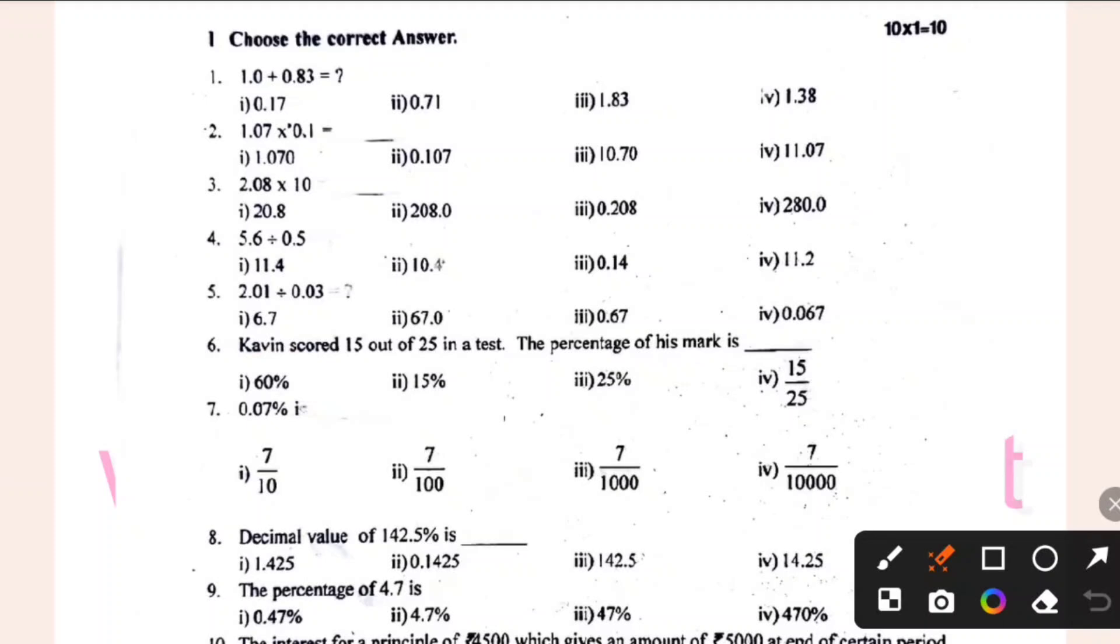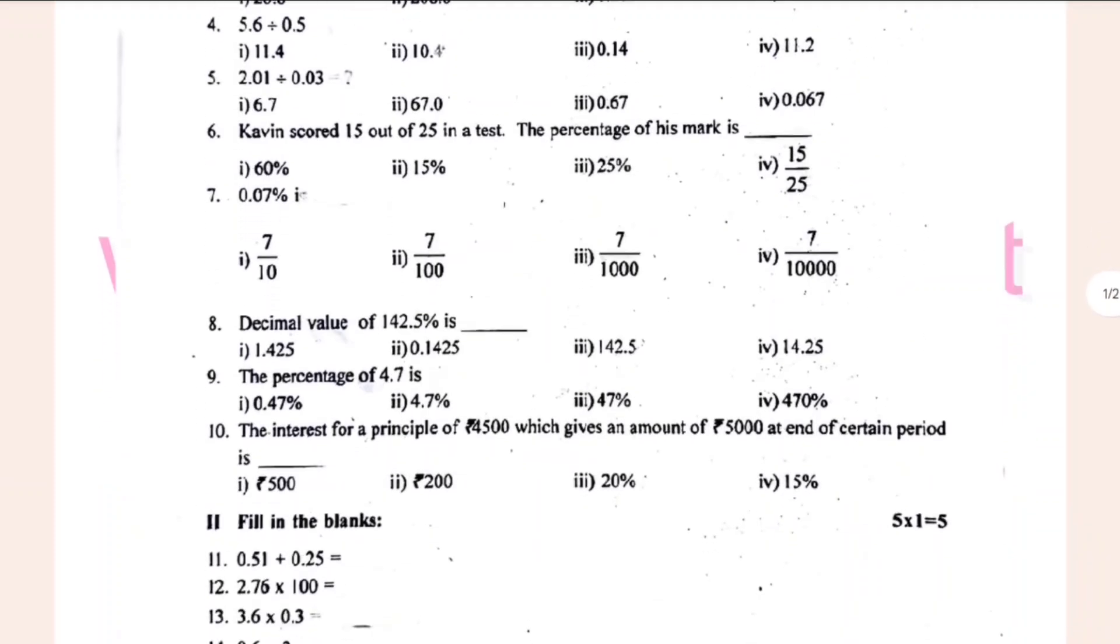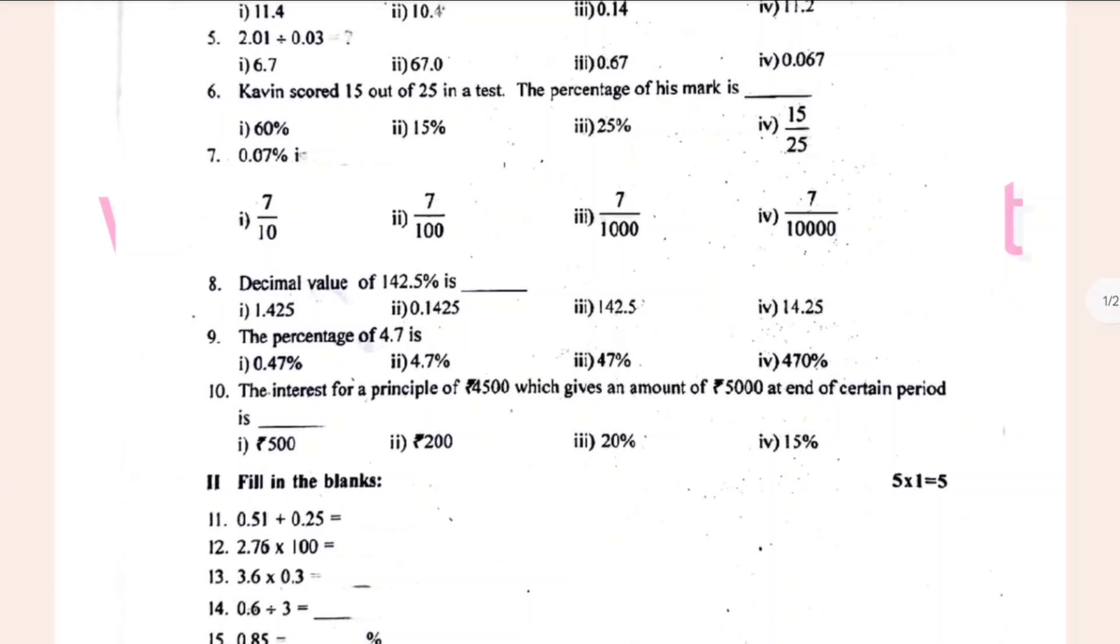The answer is 0.07 percentages. And then the decimal value of 144.5 percentages and the percentage of 4.7 is 0.5 which gives another amount of 5,000 at the end of a certain period.